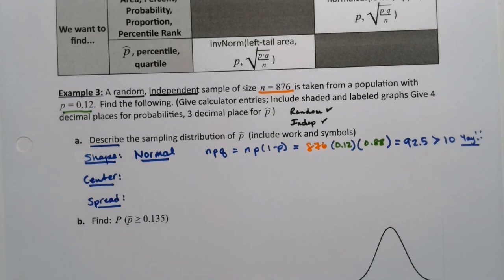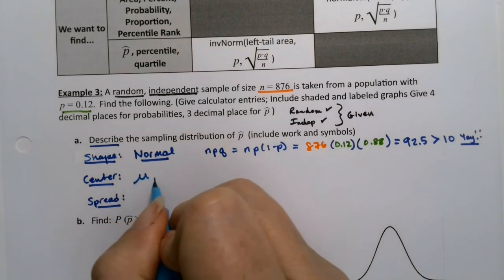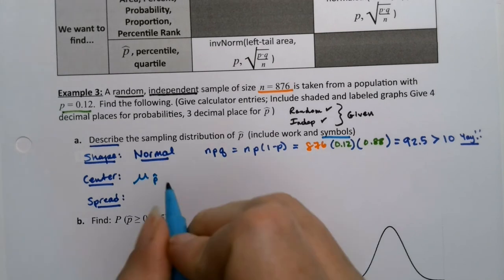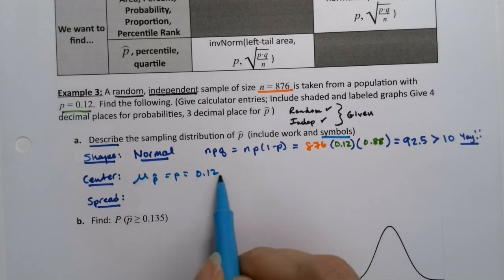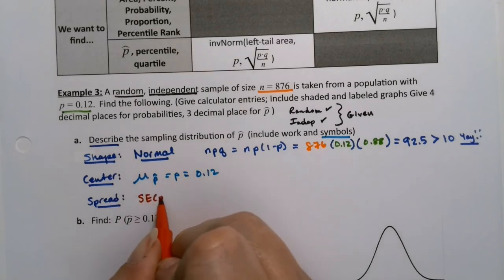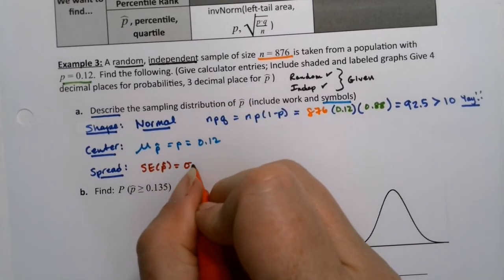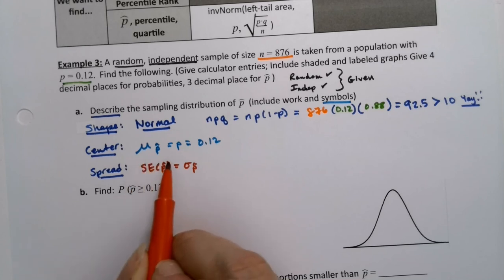Now center—we can mark these two as given. The center is the mean of the p-hats, and you do need to include those symbols, so it should look like this: mu of the p-hats, which was p, and p was 0.12. It's your population proportion—that's your parameter right there. Now the spread is the standard error of the p-hat. It's right up here on the formula—standard error of the p-hat, also known as sigma p-hat. Whichever symbol you want to use, both of those count.